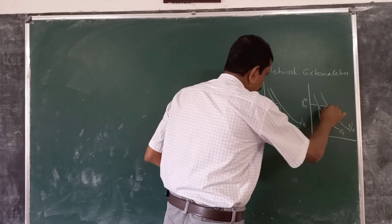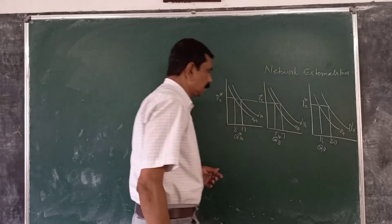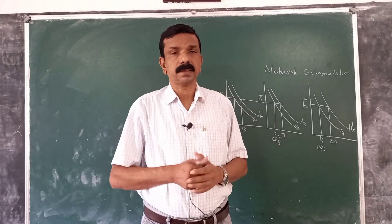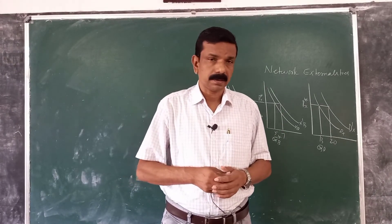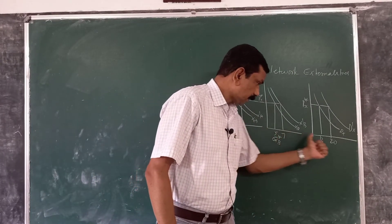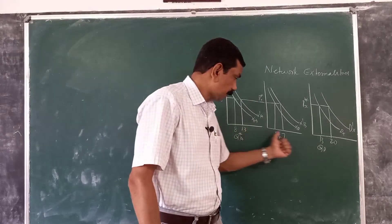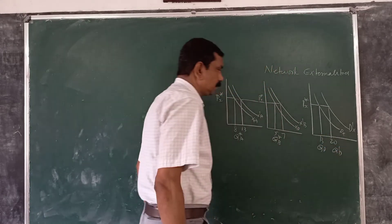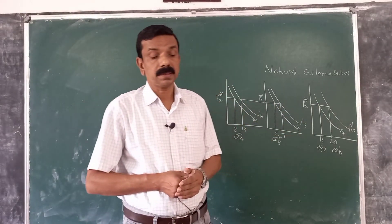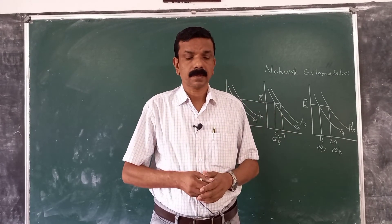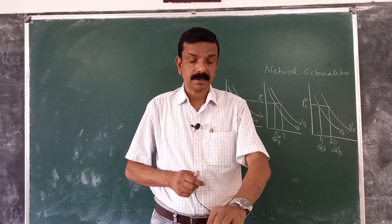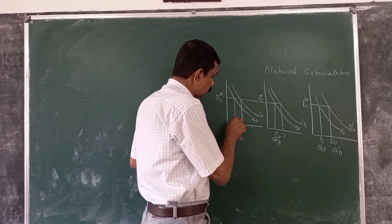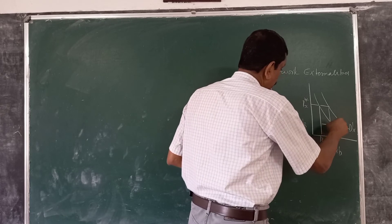Summing the shifted demand curves, you get quantities of 13 and 7, totalling 20. So, this shift occurs in response to quantities purchased by others. Total demand is not 8 plus 5 equals 13, but rather 13 plus 7 equals 20. This is the example of positive network externality — demand is higher than what simple horizontal summation would suggest.